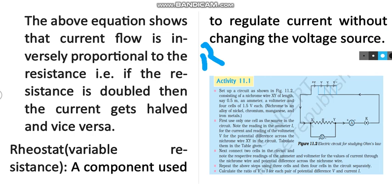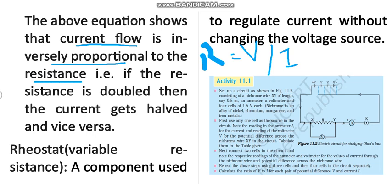From R equals V divided by I, you can see that current is inversely proportional to resistance. If we double the resistance, the current will be half; triple the resistance, the current will be one-third; and four times the resistance, the current will be one-fourth.